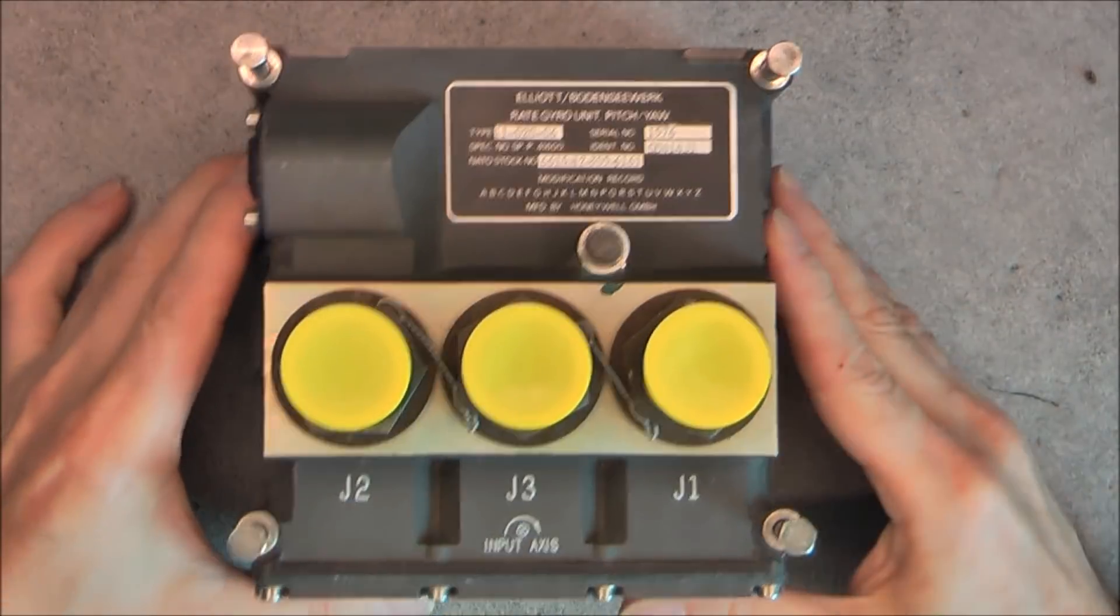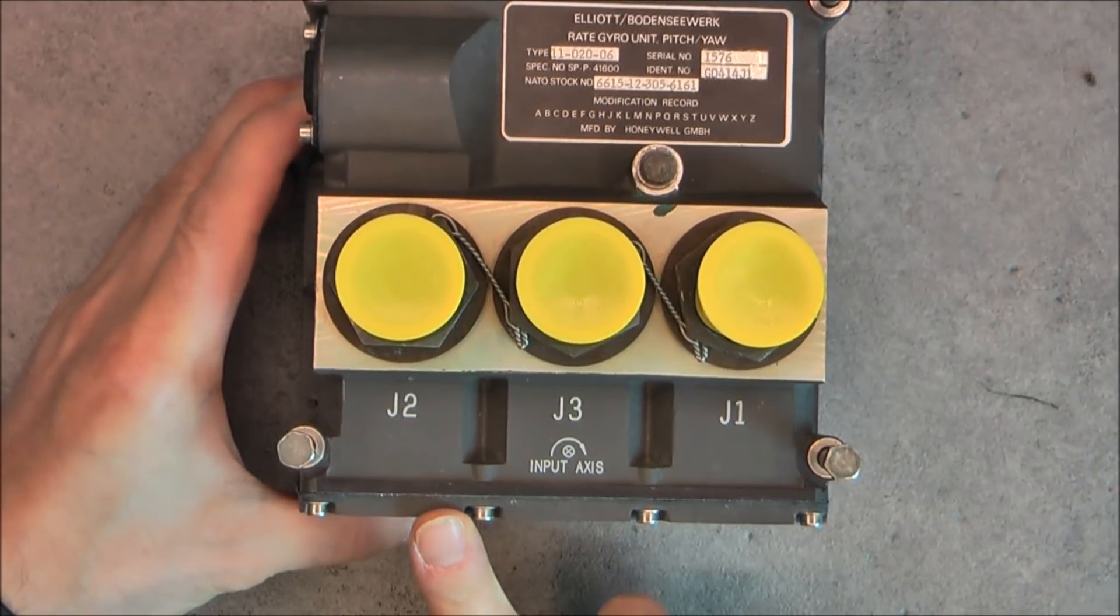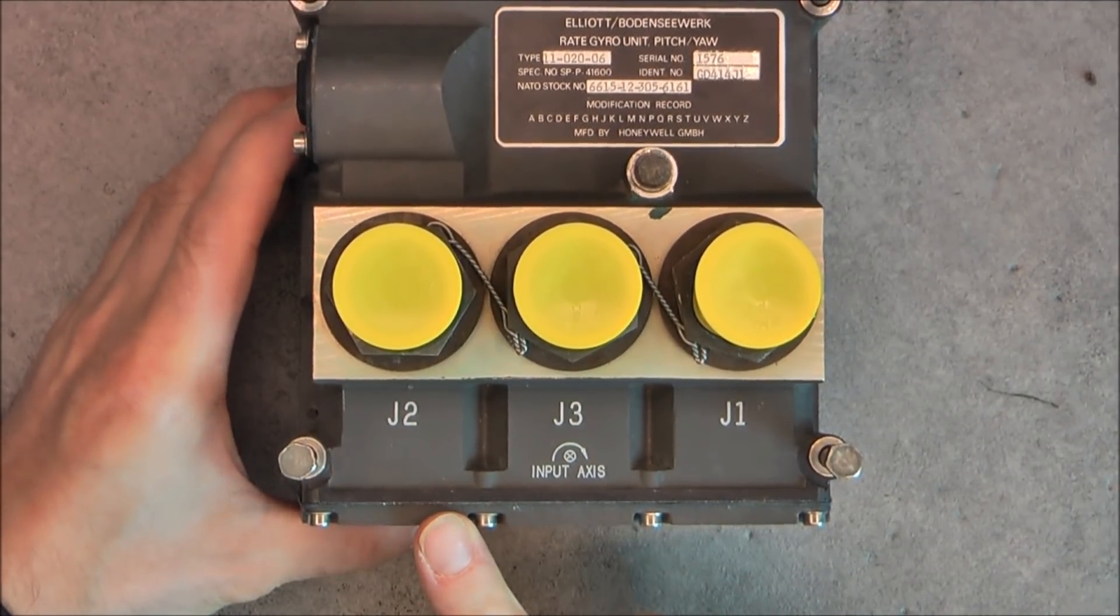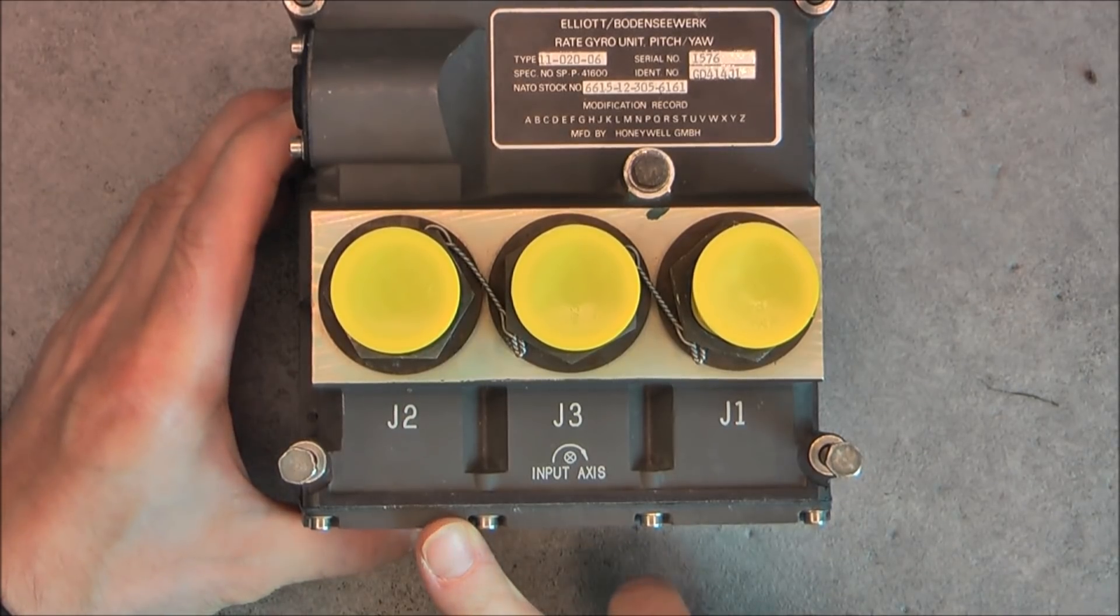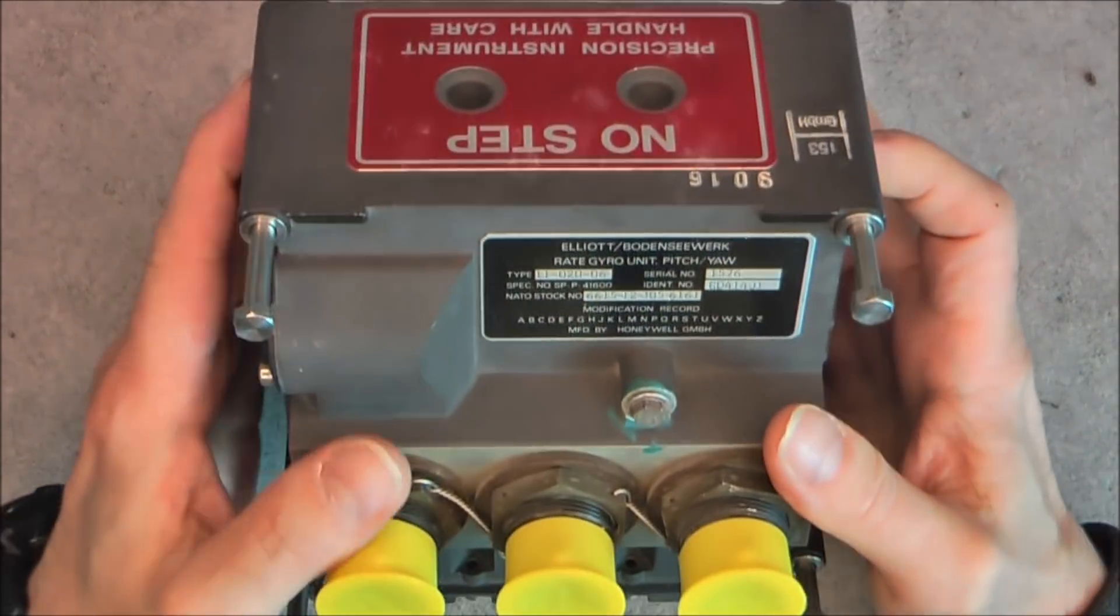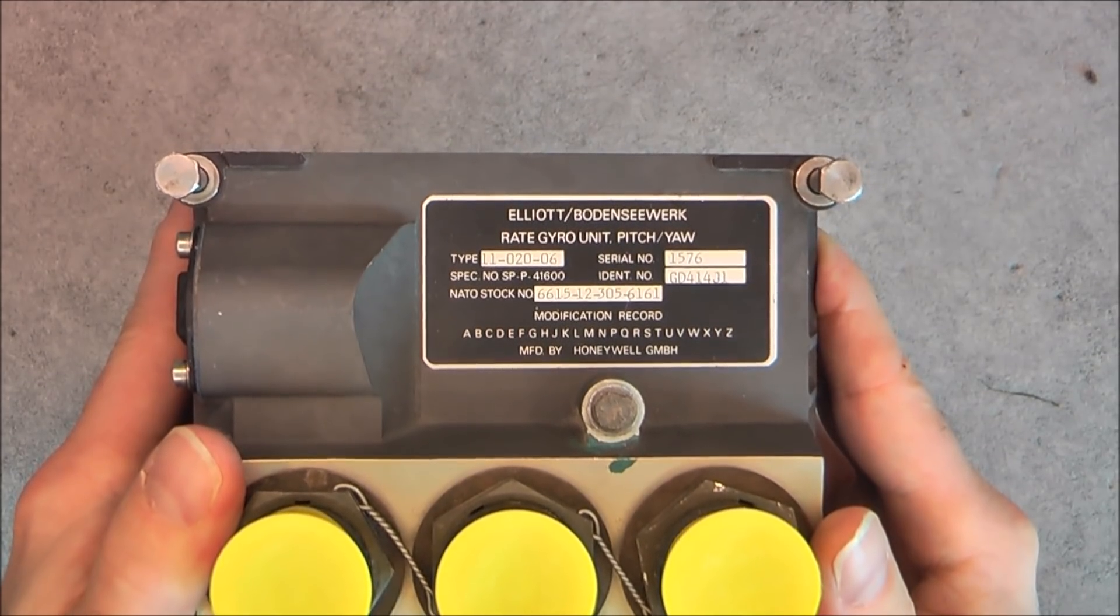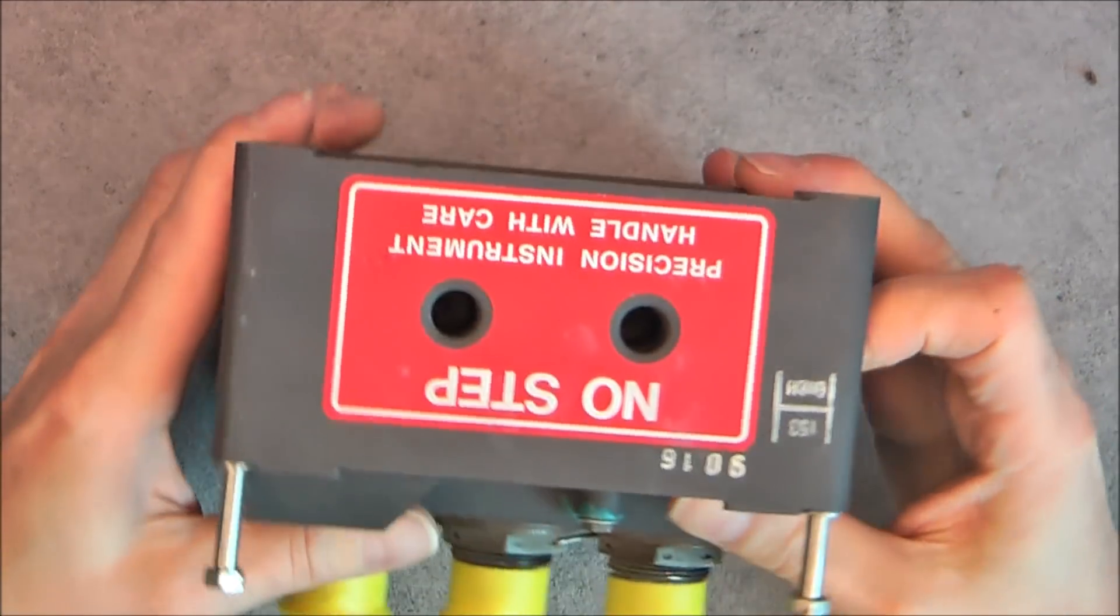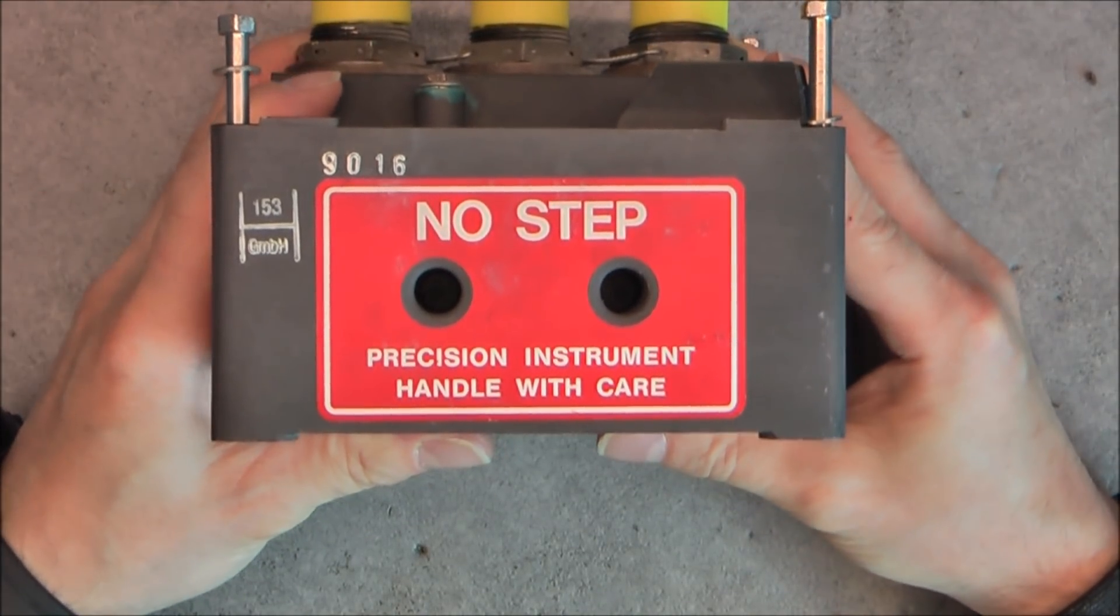So it seems we have three times the same unit inside. So unlike the angle of attack sensors on Boeing aircraft, we have a double redundancy here. Here is the information for you. And of course, no step precision instrument handle with care.